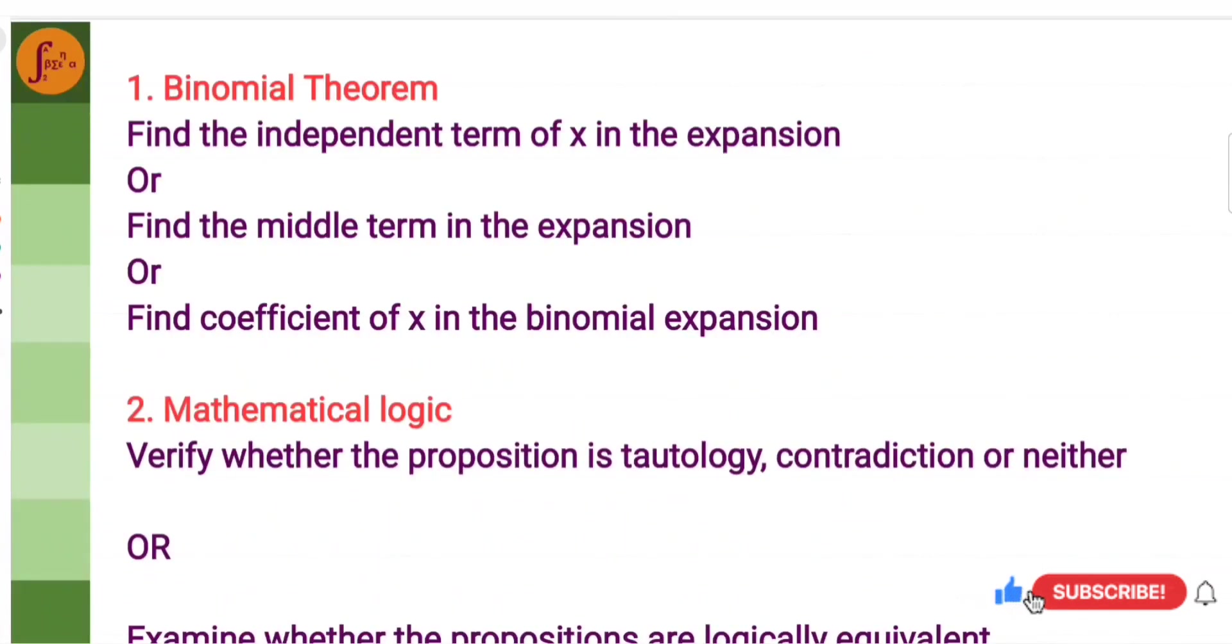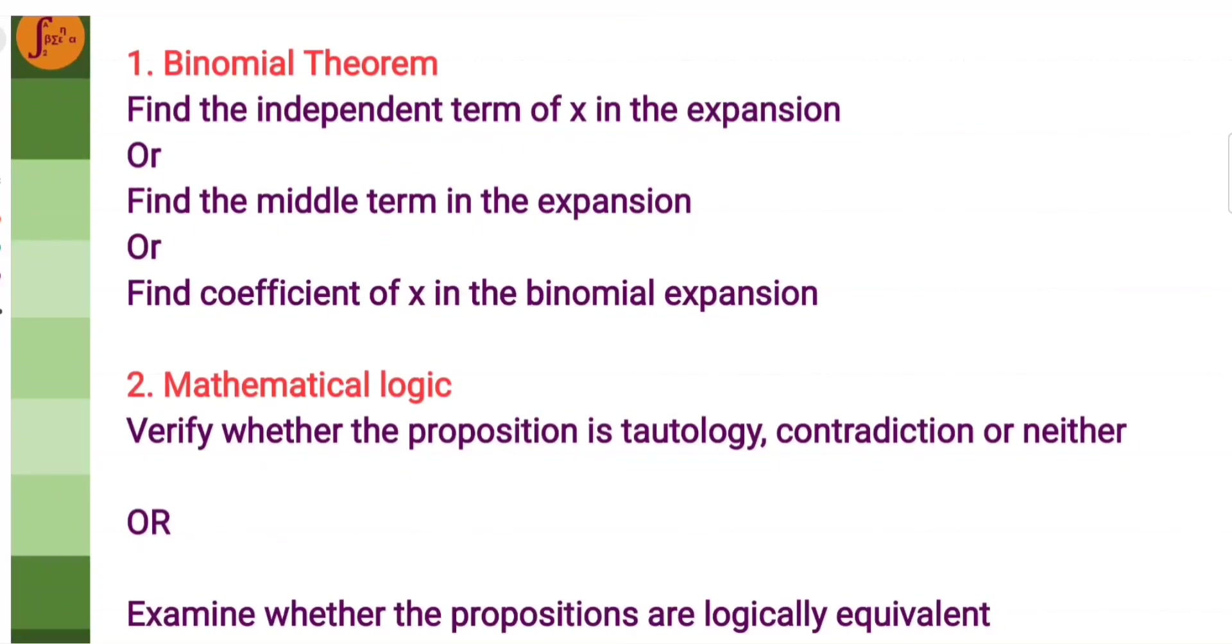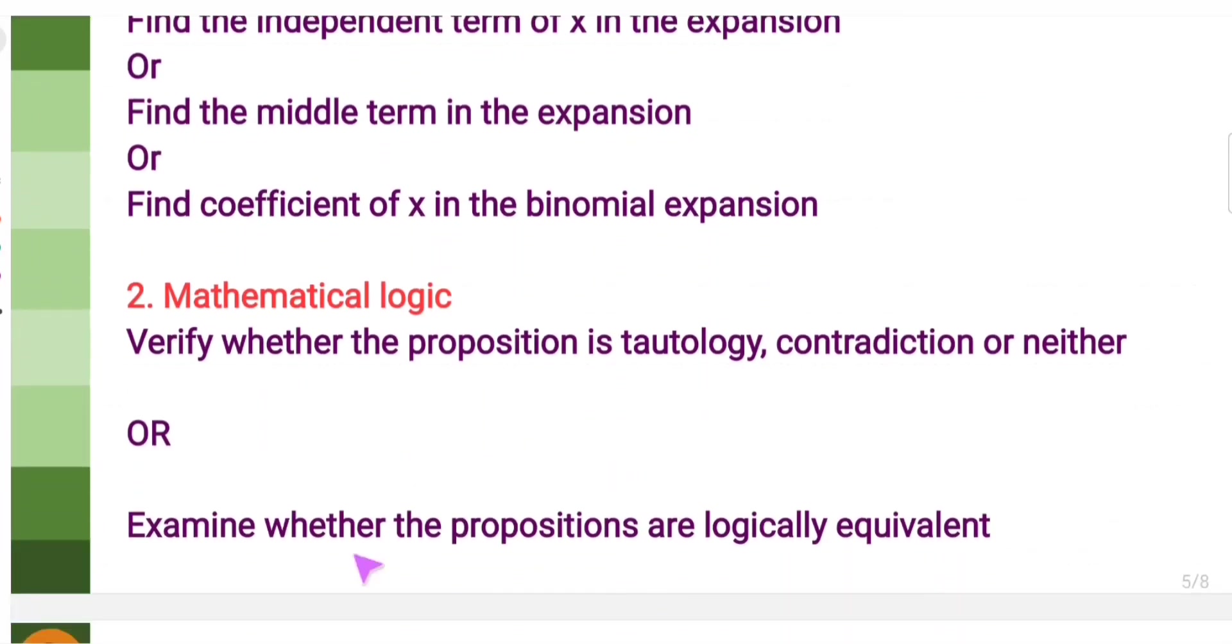Again, we have binomial theorem in Part D. It can be either independent term, middle term, or coefficient of x. Focus on all of these subtopics. In mathematical logic, given a proposition, we should be able to tell if it is a tautology, contradiction, or neither. Or given two propositions, we will have to examine if it is logically equivalent or not.